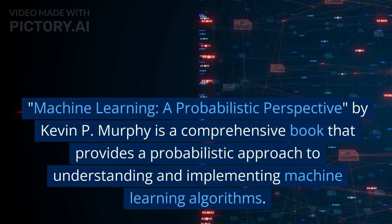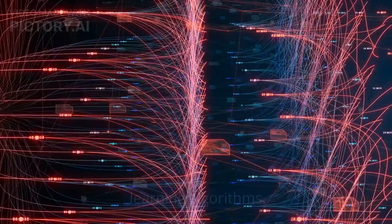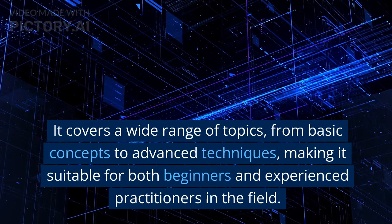Machine Learning: A Probabilistic Perspective by Kevin P. Murphy is a comprehensive book that provides a probabilistic approach to understanding and implementing machine learning algorithms. It covers a wide range of topics, from basic concepts to advanced techniques, making it suitable for both beginners and experienced practitioners in the field.